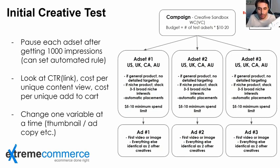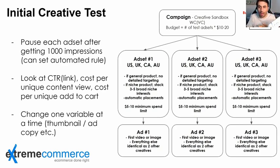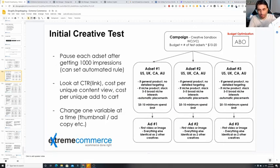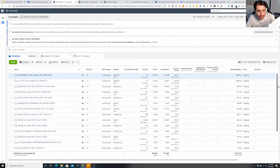Then I put a spend limit on all ad sets — for example $5. You can also set a condition: when an ad set reaches 1000 impressions, it automatically kills itself. Some ad sets run fast, some slow. You can set an automated rule: as soon as it hits 1000 impressions or $5, it kills there and then. Look at the results: check click-through rate, cost per click, cost per unique content views, cost per unique add-to-cart, and cost per click — these four or five different metrics you need to analyze.